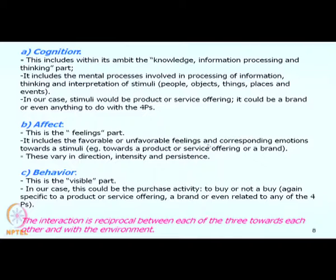Let us elaborate a little bit on cognition, affect, and behavior. Cognition basically includes the knowledge, the information processing, the thinking part — it includes the mental processes which are used by a consumer as and when he is exposed to a marketing stimuli. This marketing stimuli could be anything: people, events, places, objects, things — any and all of these act as stimuli. When a consumer gets exposed to the stimuli, he obtains some information, and mental processes get involved in the whole process of information. When we talk of cognition, it is the mental processes involved in processing information, thinking, and the interpretation of the stimuli.